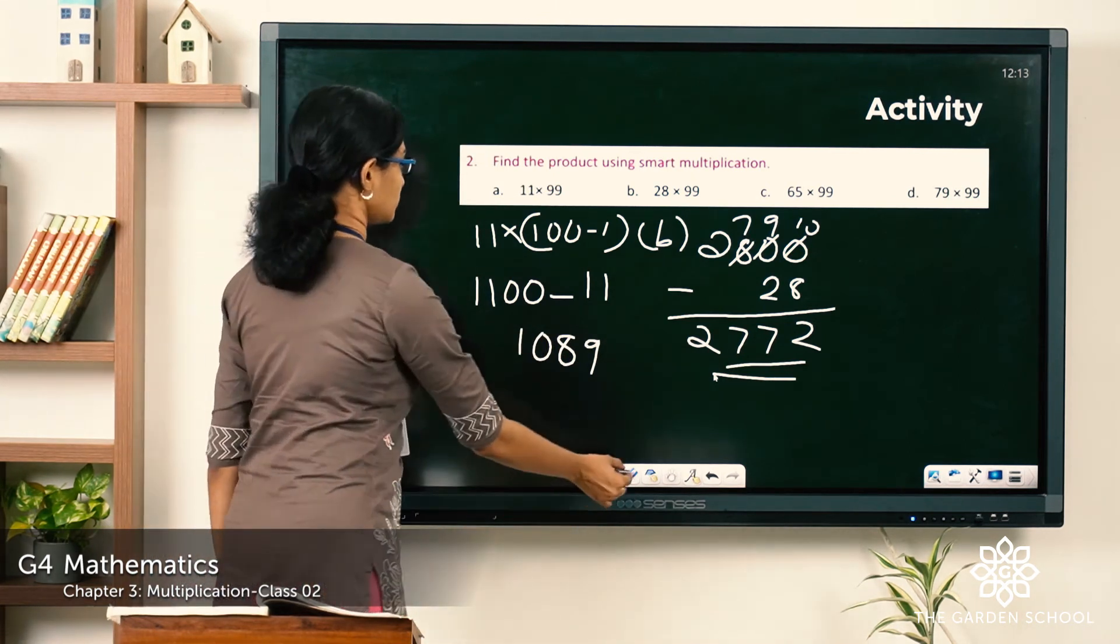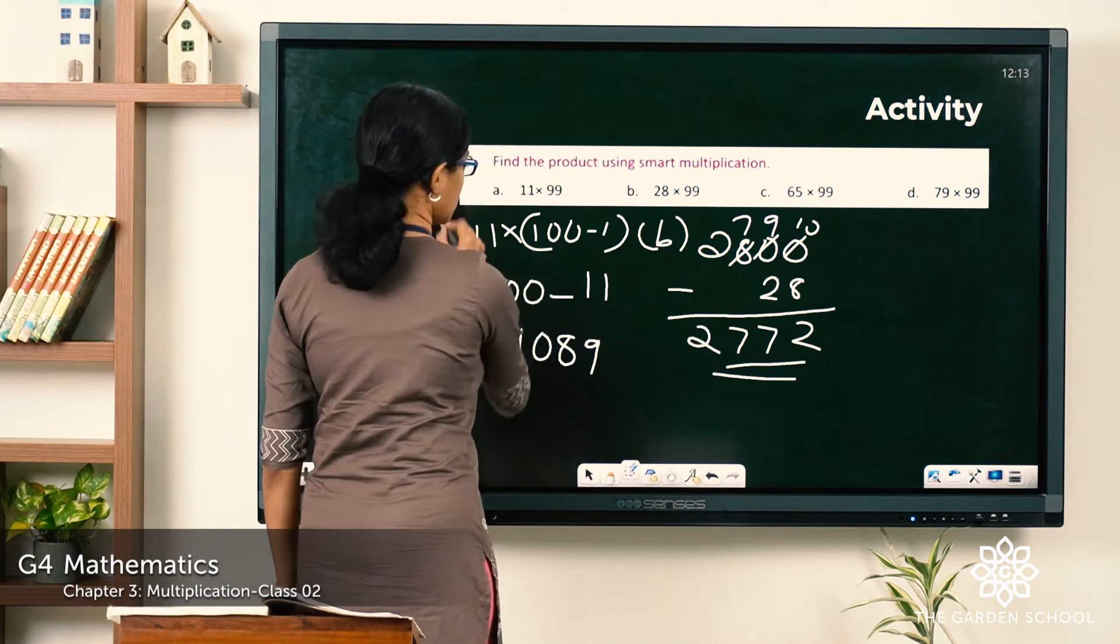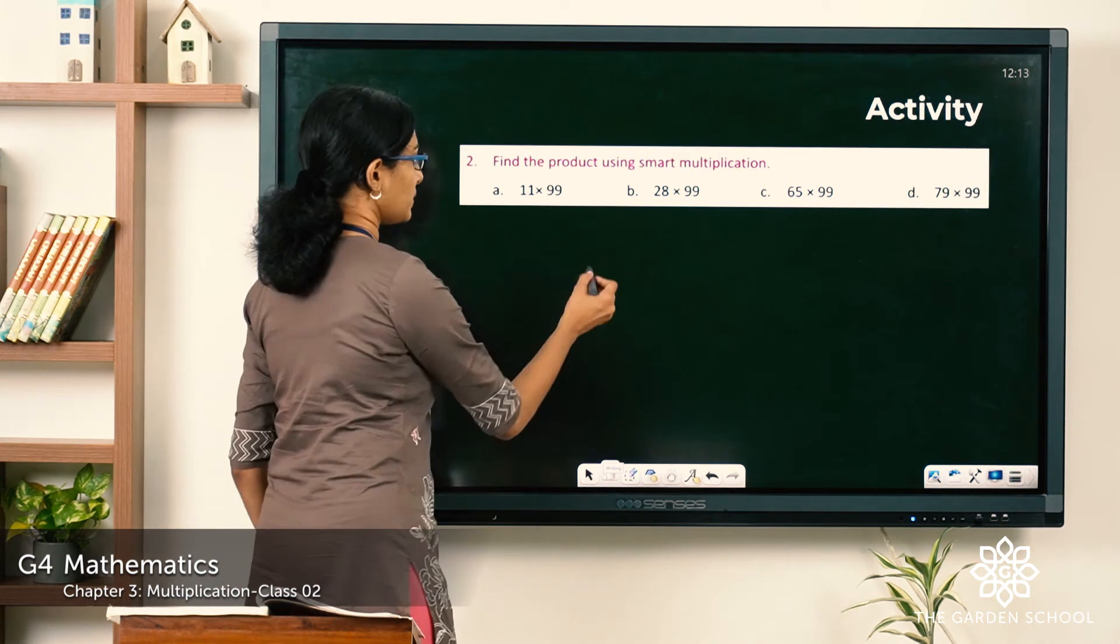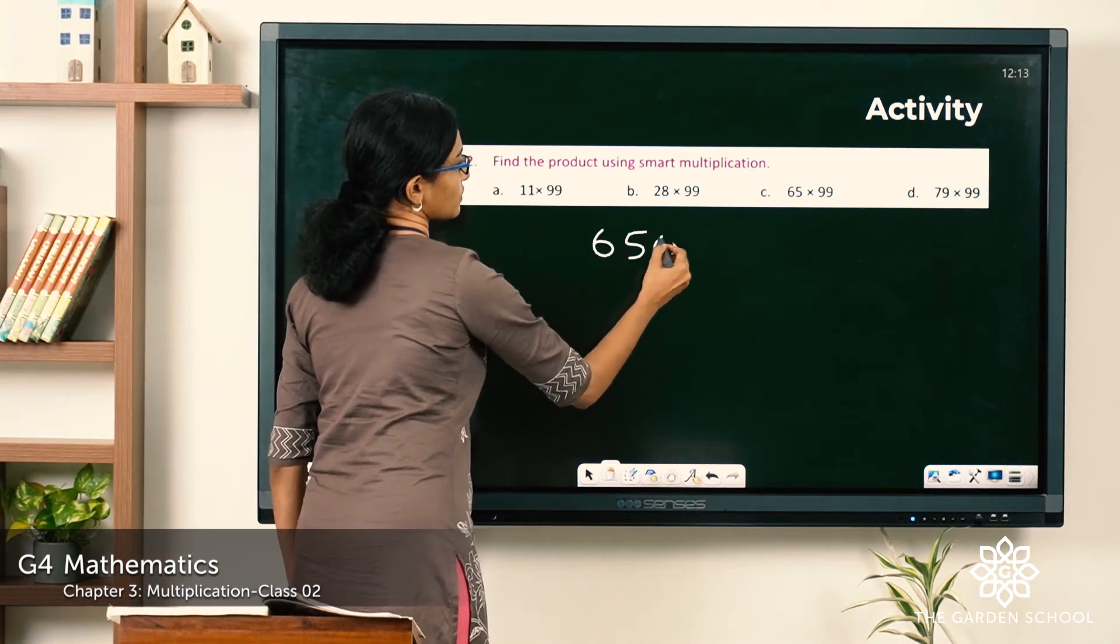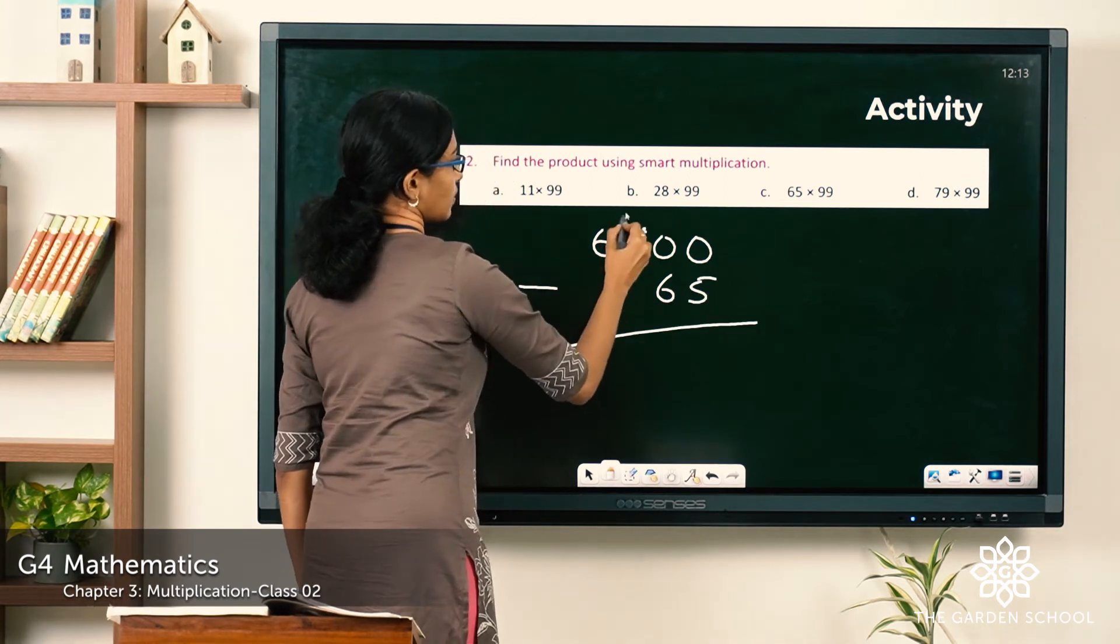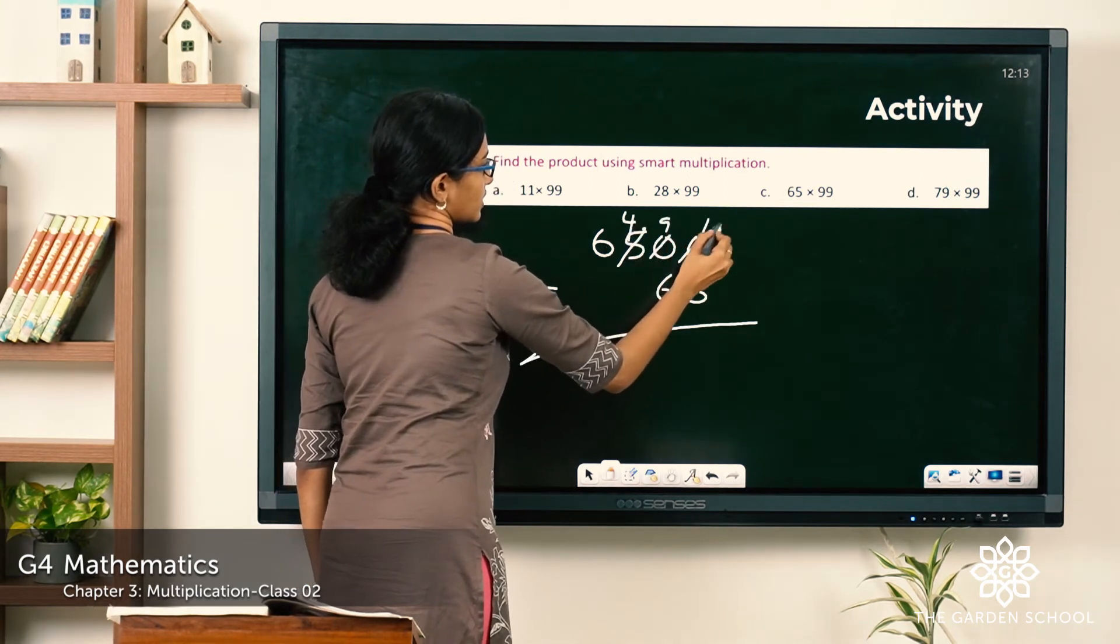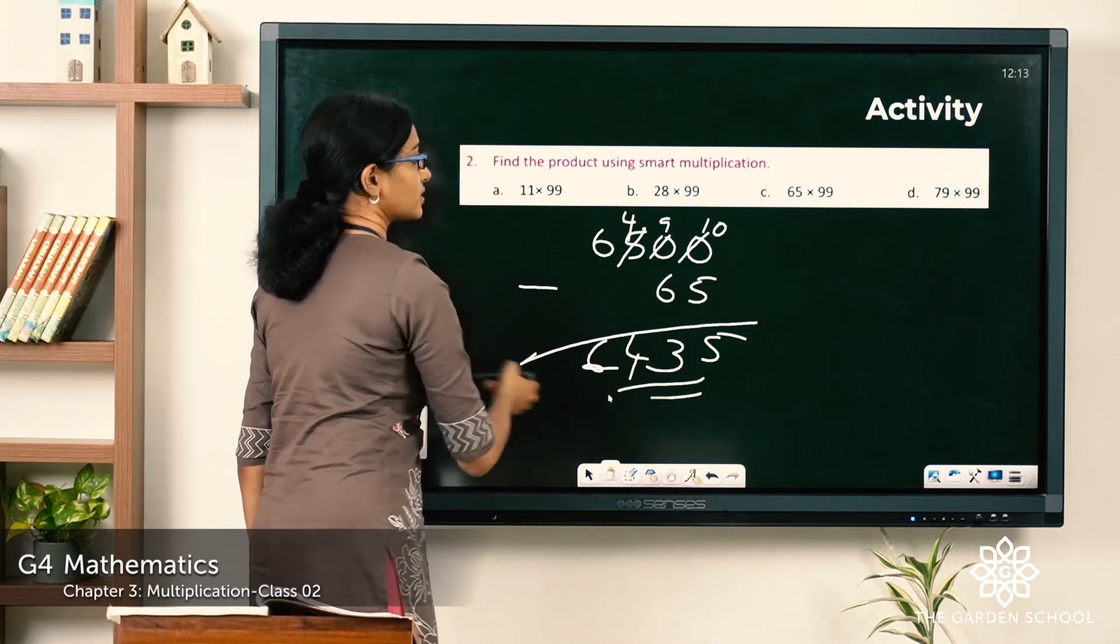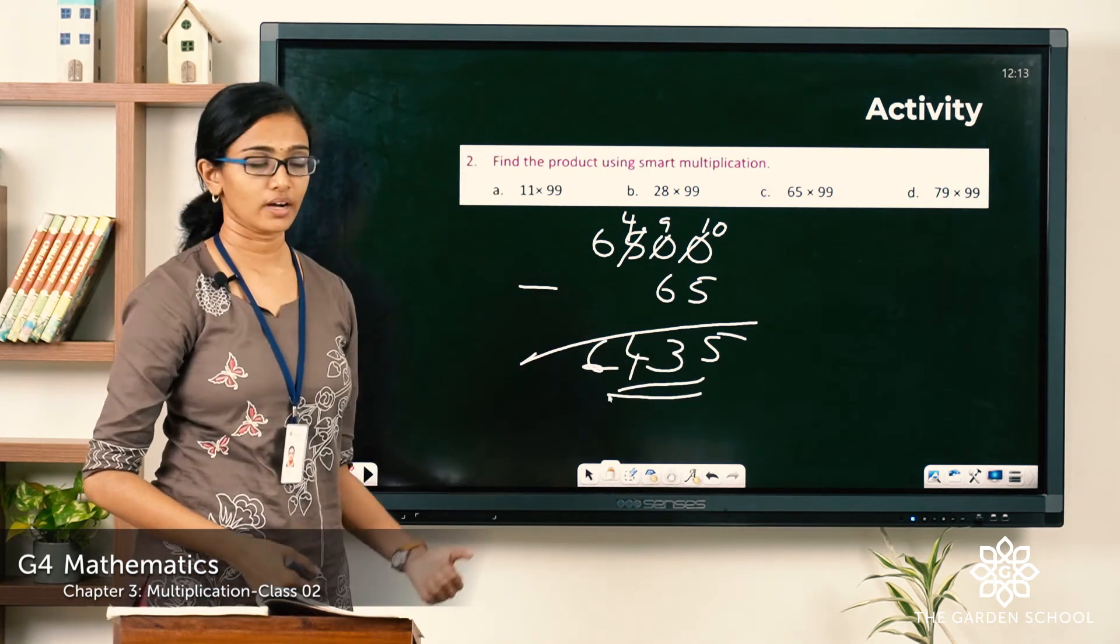Now the third question. See, 65 into 99. It would be equal to 6500 minus 65. So let's regroup and it would be 5, 3. What is the answer? 6435.